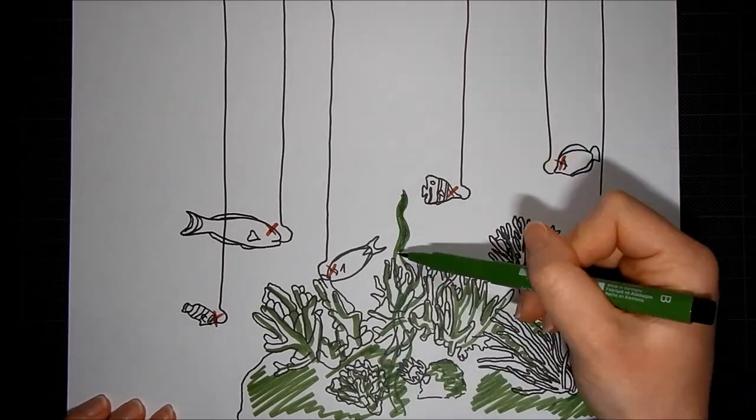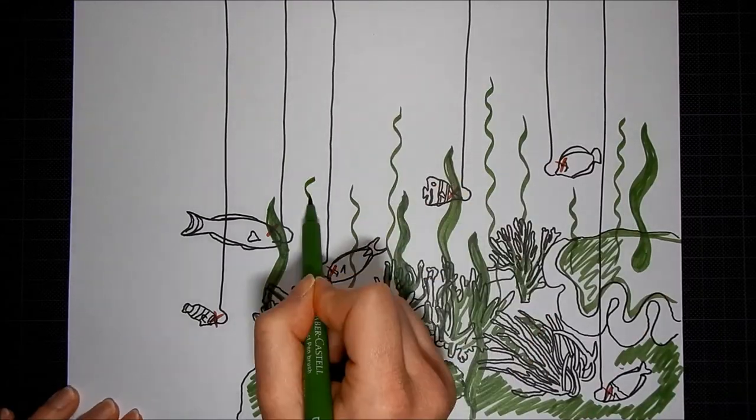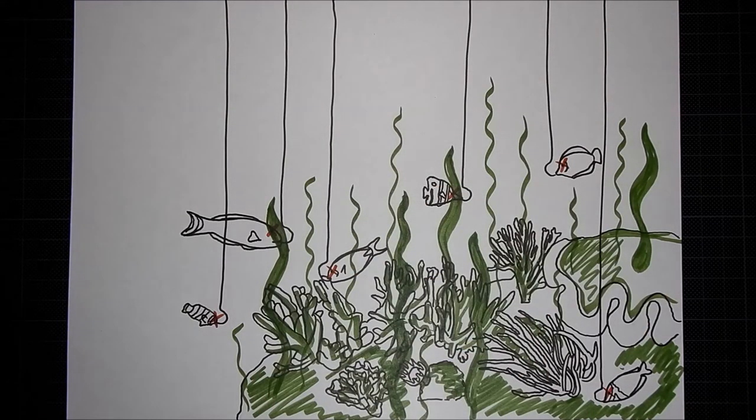And an algae-dominated reef, well, it just doesn't support as much life as coral reefs do. Now, this is just one example of how overfishing can have some domino-like effects on a range of living things. I could give you more, but I think you get the picture.